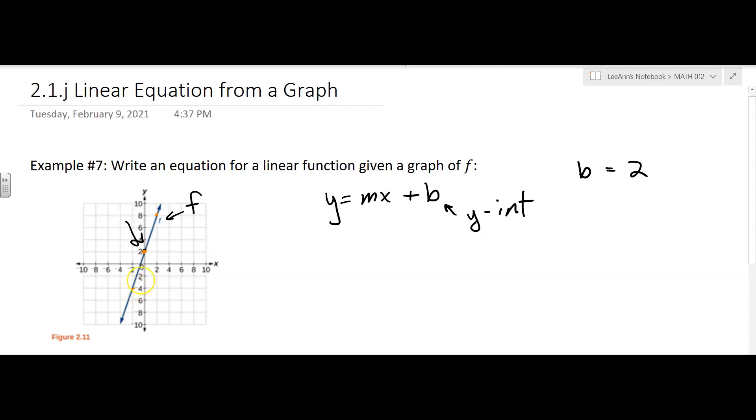So I'm counting up 2, 4, 6, and over 2. So it looks like the slope is rising 6 and running 2. Yeah, so it's just rise over run.